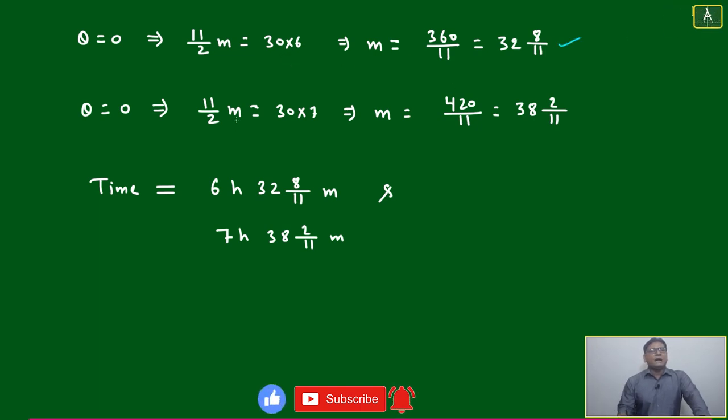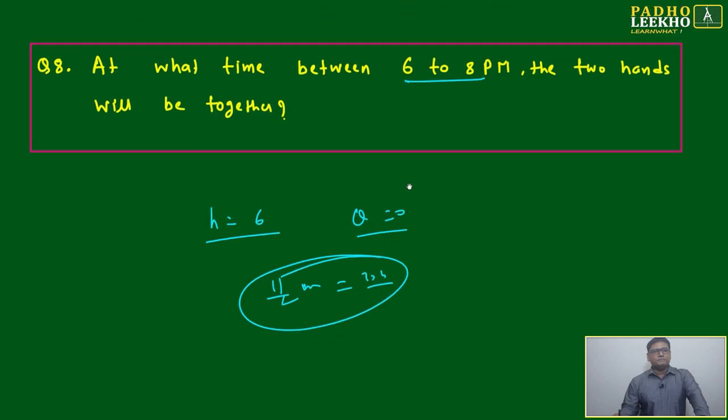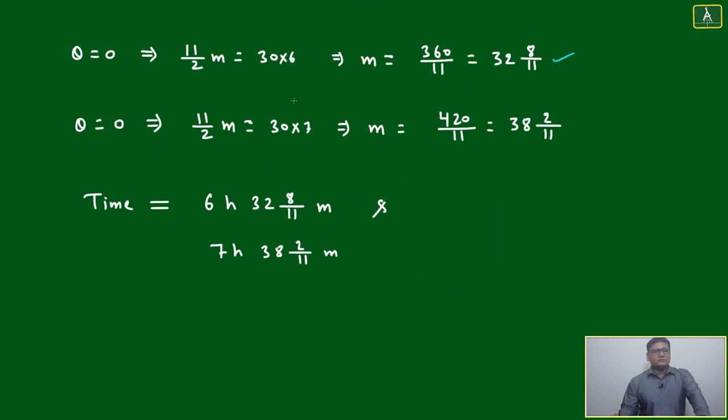And again, 11 by 2 m equal to 30 into 7, because it is given two time periods, 6 to 8. First we'll take at 6, next we'll take at 7, because almost every hour they will cross each other.